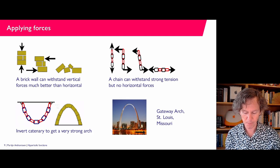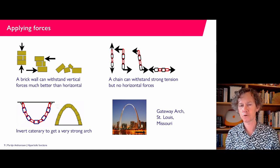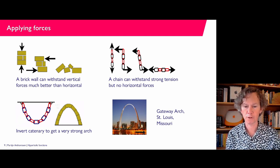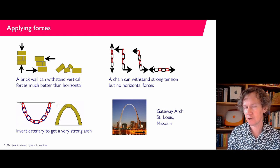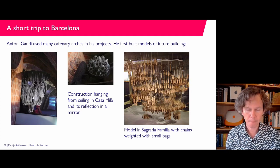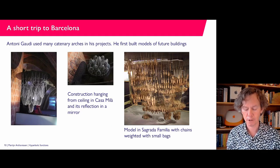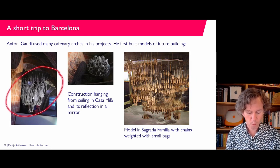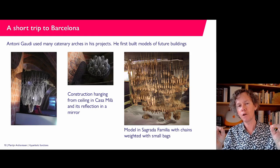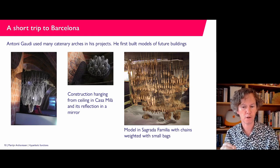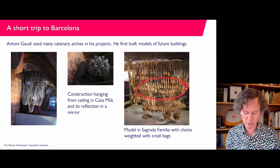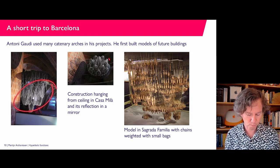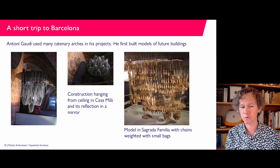One famous example is the Gateway Arch in St. Louis, Missouri — which used to be on the cover of the calculus textbook Smith & Minton used in this course. Many people think it's a parabola, but its shape is actually a cosine hyperbolic. Another example is in Barcelona, where Gaudi constructed many buildings using this principle. He built models with hanging chains, and for La Sagrada Familia he used little bags of sand to mimic loads, then inverted the models — reflected in a mirror below — to find the arch shapes.